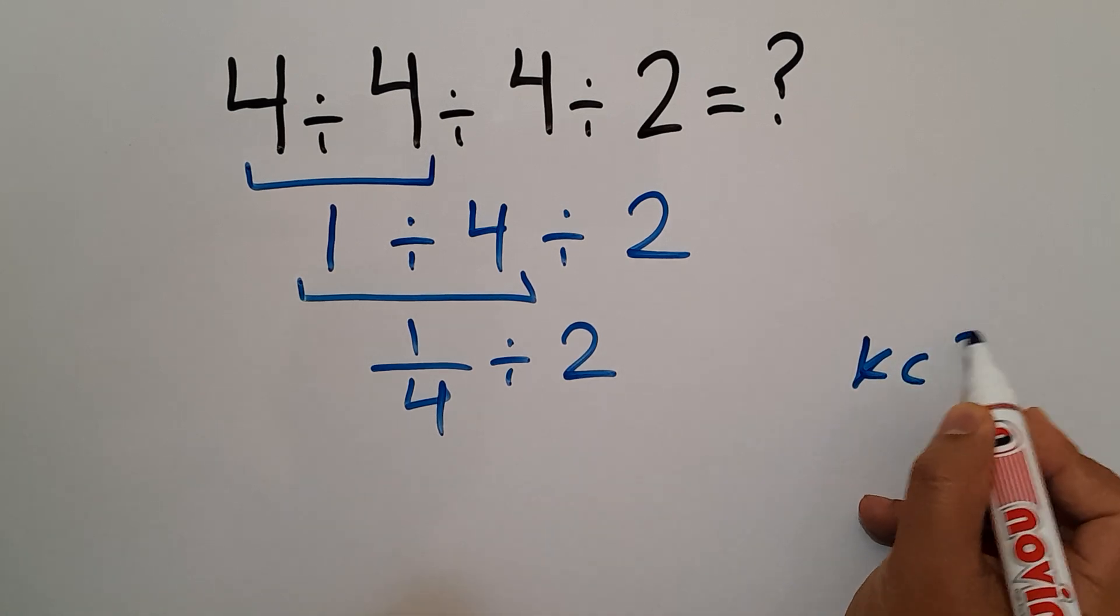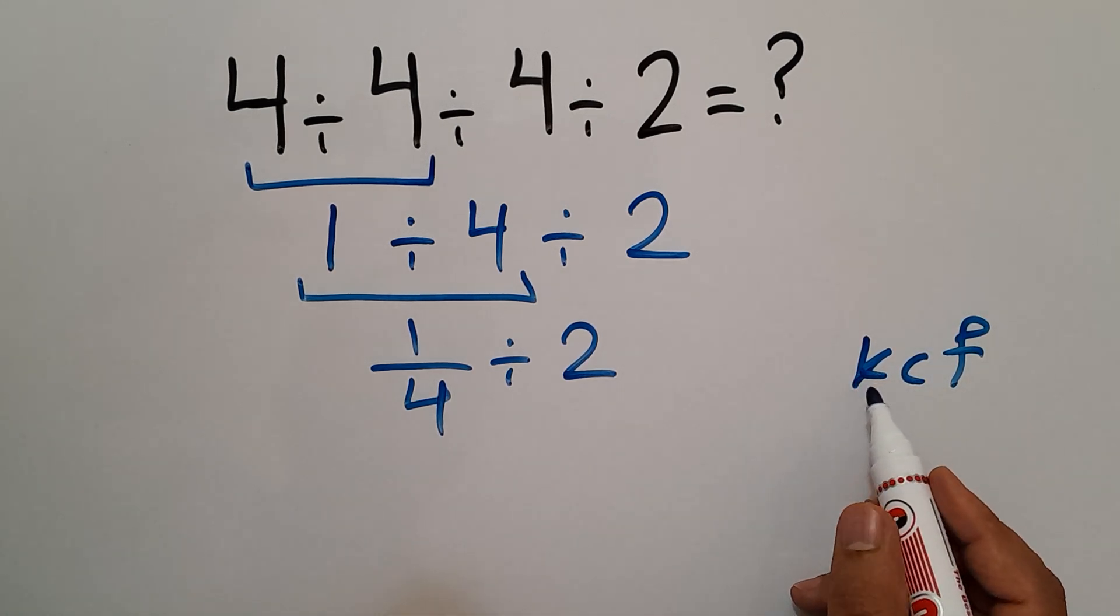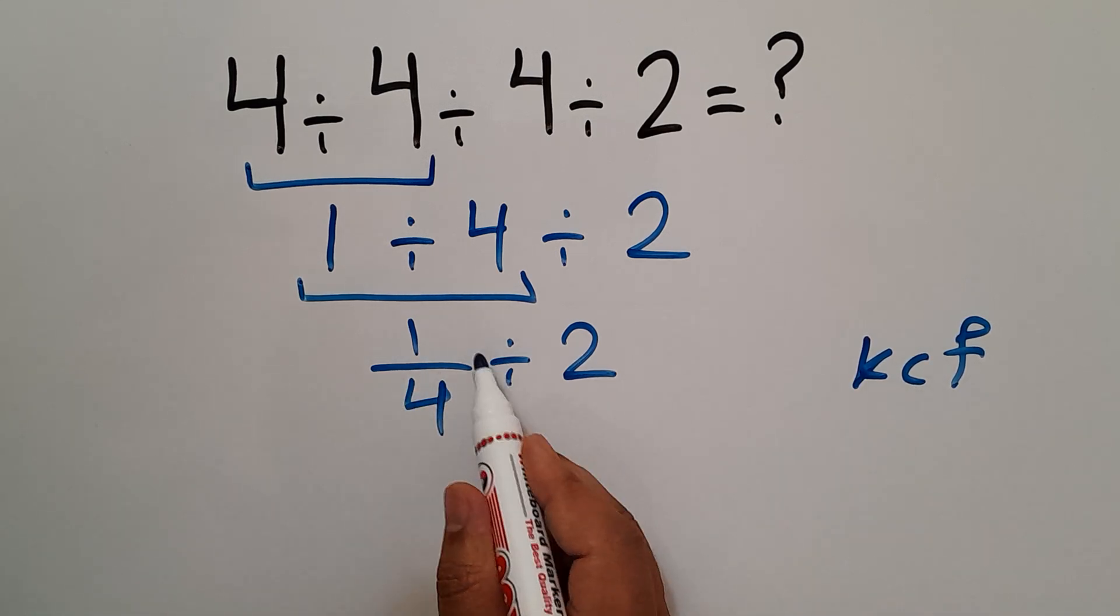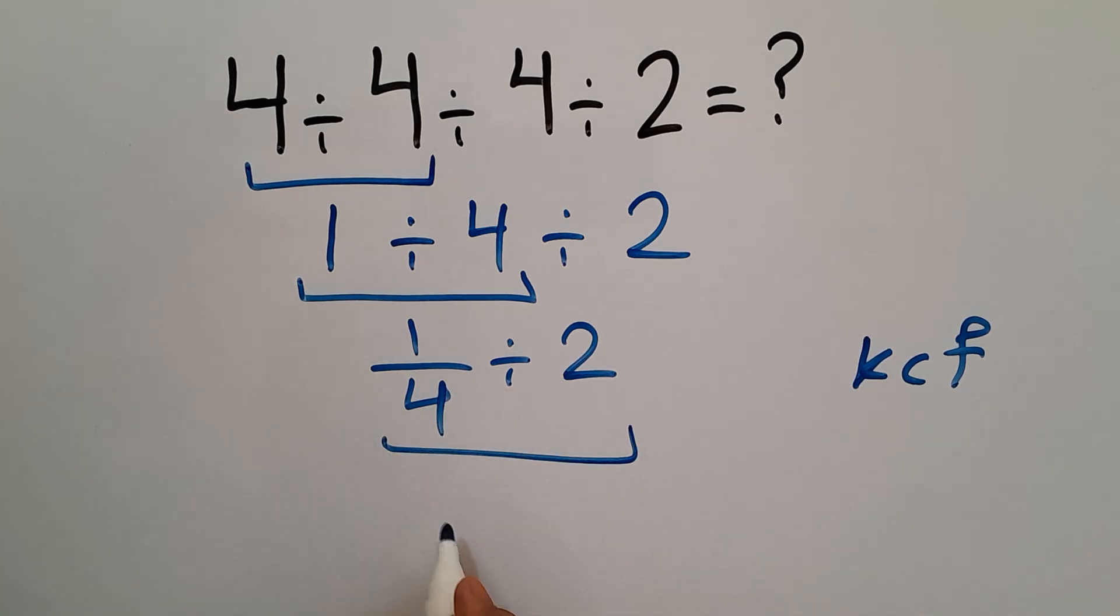According to the KCF rule: K stands for keep, C stands for change, and F stands for flip. Keep the first fraction, change the division to multiplication, and flip the second fraction. So we can write 1 over 4 times 1 over 2.